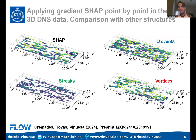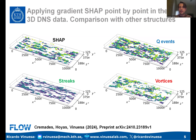For each flow field in the dataset, we calculate three classically studied coherent extractors: Q events, which are regions of intense Reynolds shear stress; vortex clusters, identified using the method by Chong and others (different methods give very similar results); and near-wall streaks, studied since Kline and others several decades ago, which are responsible for the production mechanisms close to the wall.